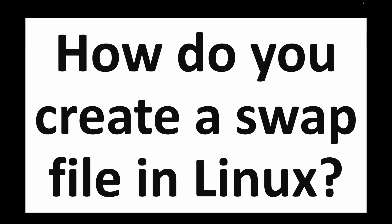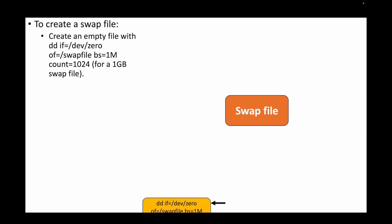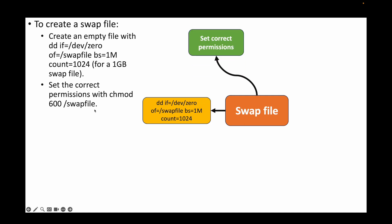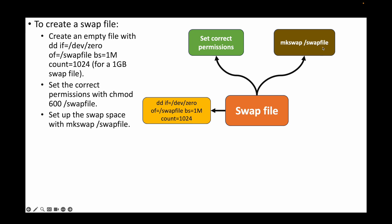The next question is: how do you create a swap file in Linux? There are a series of commands to run. First, create an empty file — assuming we are creating a 1 GB swap file. Then define the necessary permissions using chmod 600 followed by the swap file name. Then set up the swap space by running mkswap followed by the swap file name.